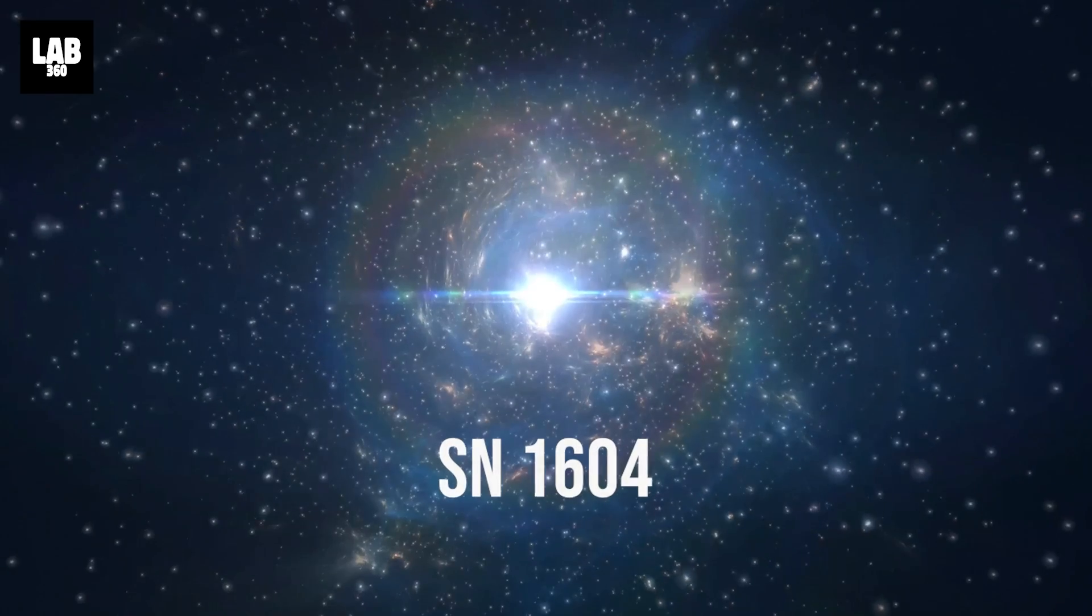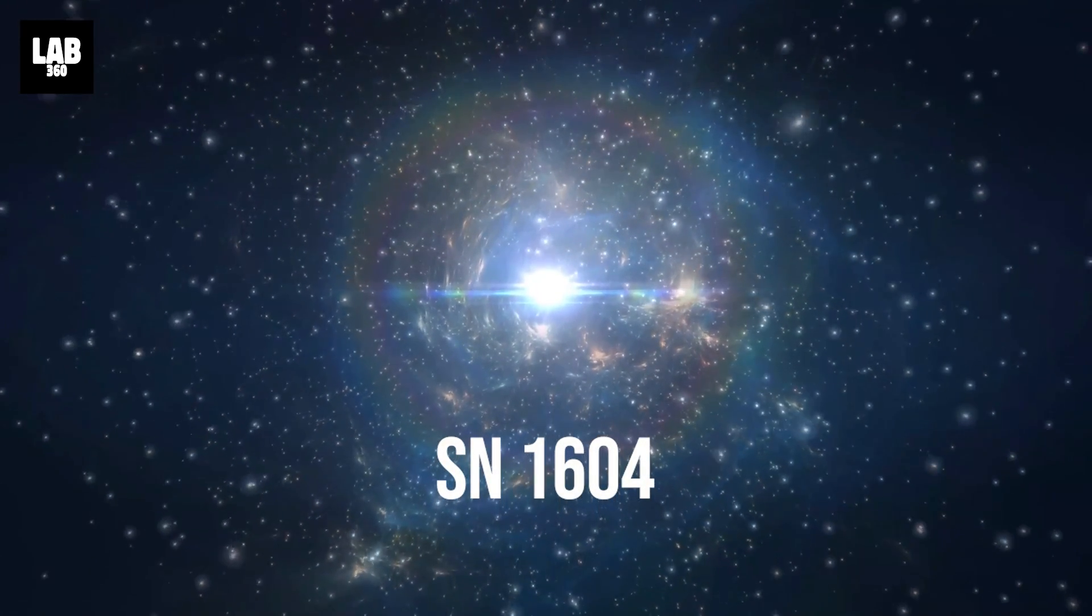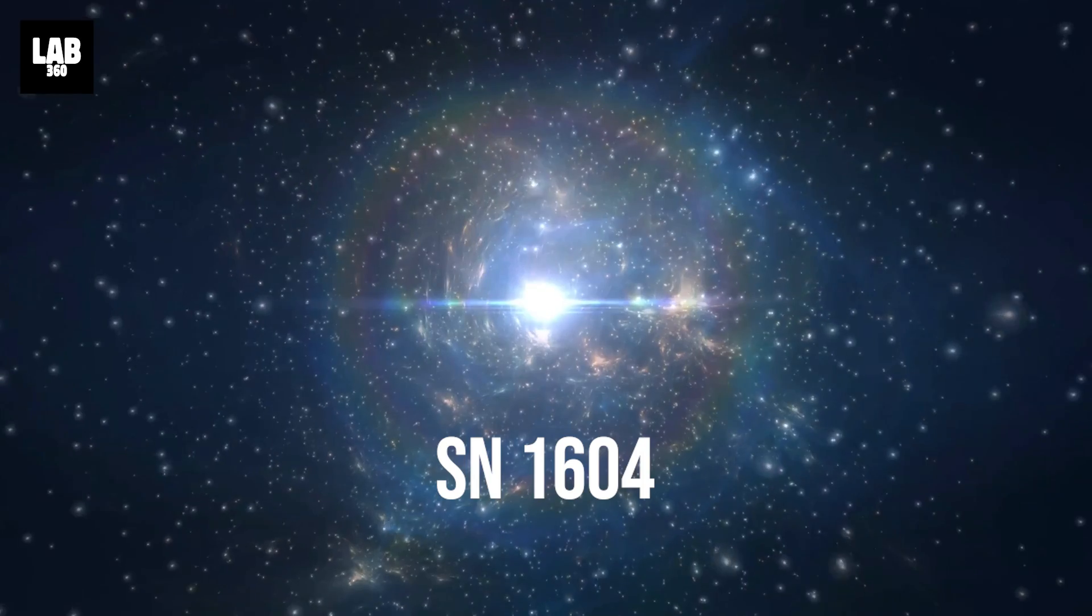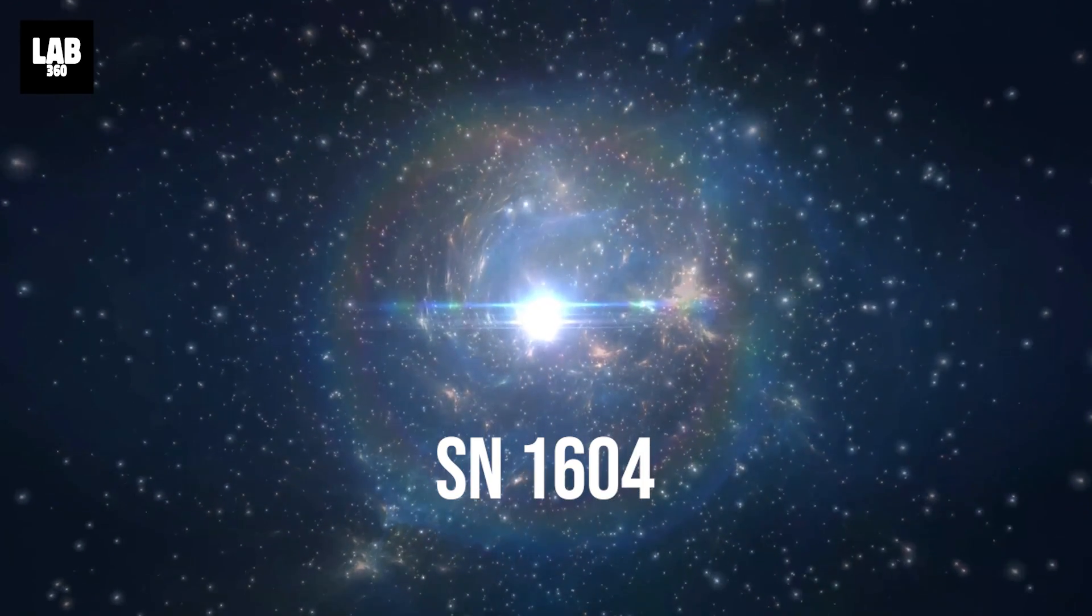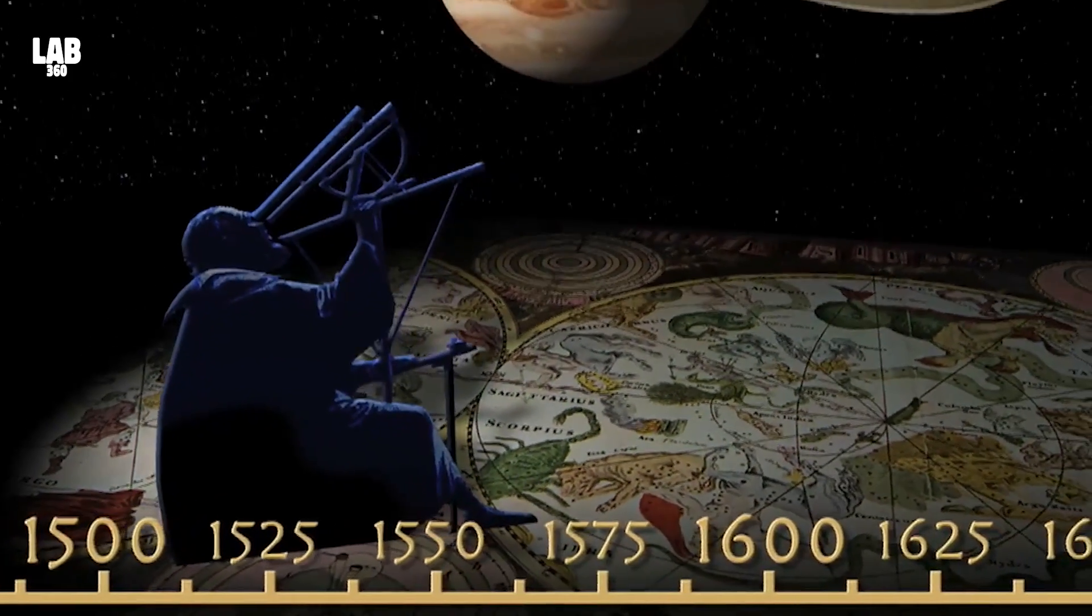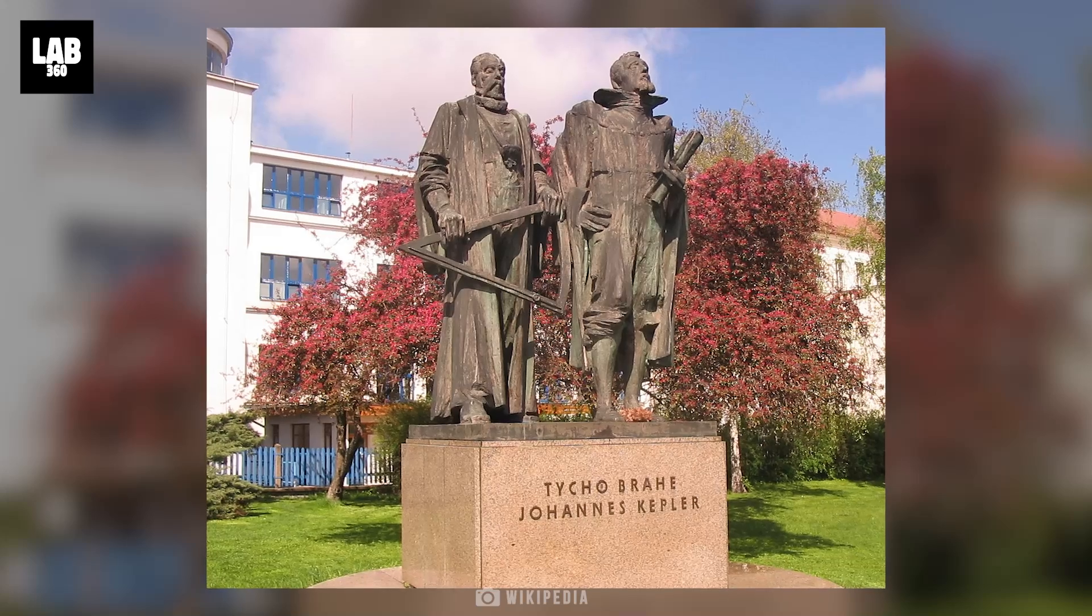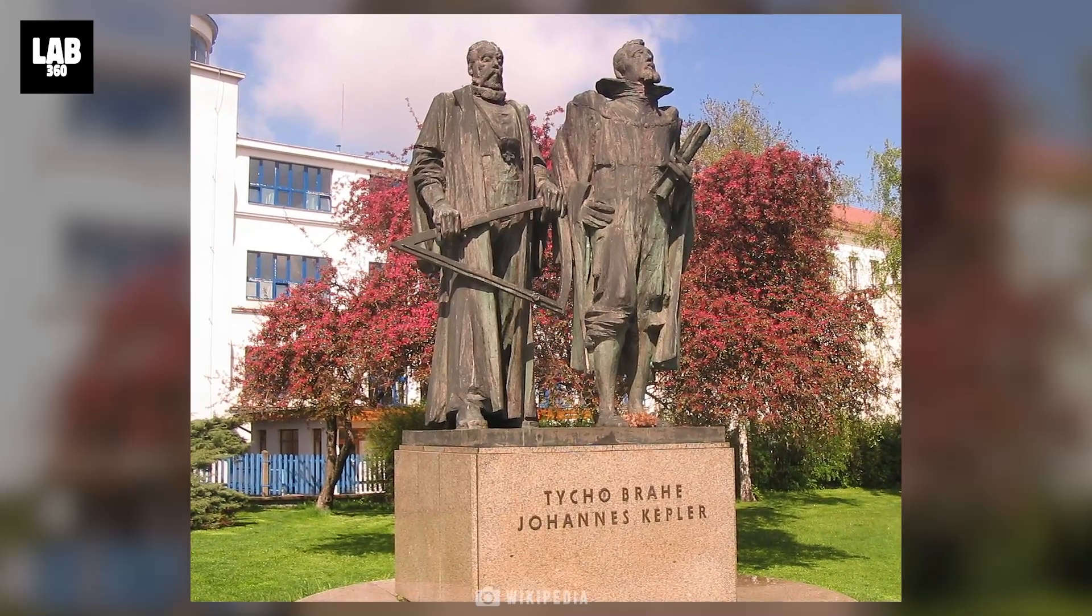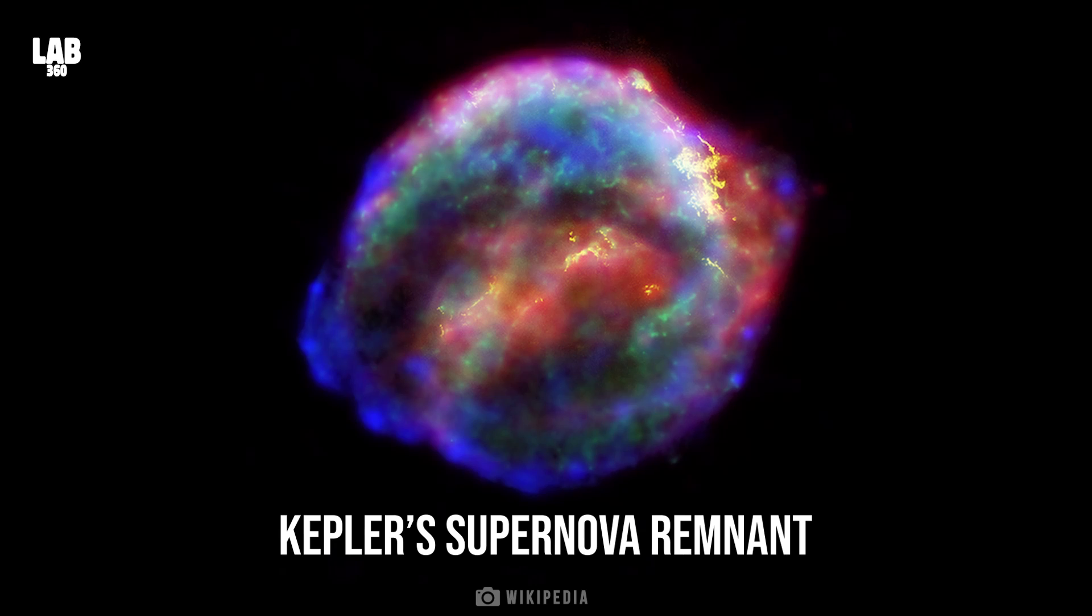Next is SN 1604 which was visible to the naked eye for over a year in 1604 AD. This was the last supernova observed in our Milky Way. Many astronomers of that time noted the sudden appearance of this star in the night sky, but Johannes Kepler carried out detailed observations of it, and hence SN 1604 is also called Kepler's supernova in his honor.